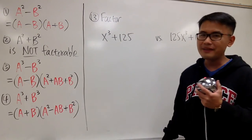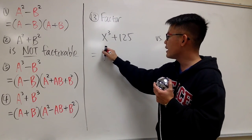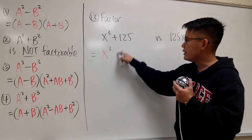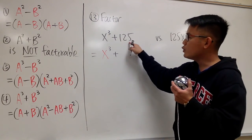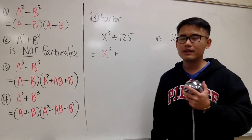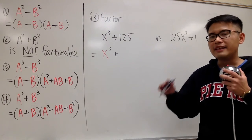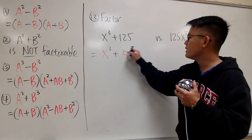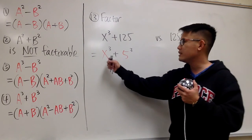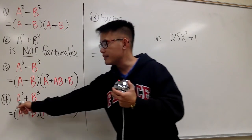There's actually an answer for that. To get started, let me put that down as x to the third power, then bring down the plus. For the 125, we have to ask ourselves: what to the third power will give us 125? The answer is 5. So we put that down and raise it to the third power, giving us x to the third power plus 5 to the third power — that's exactly this expression.